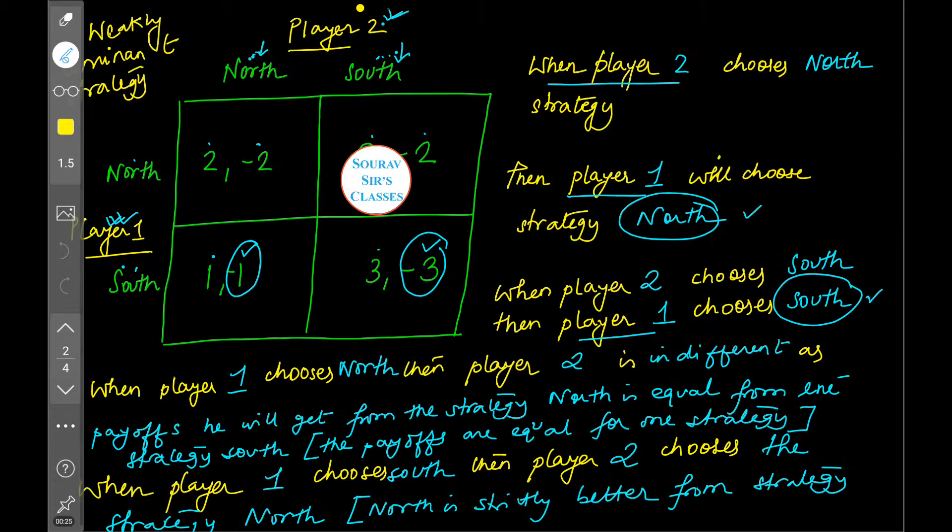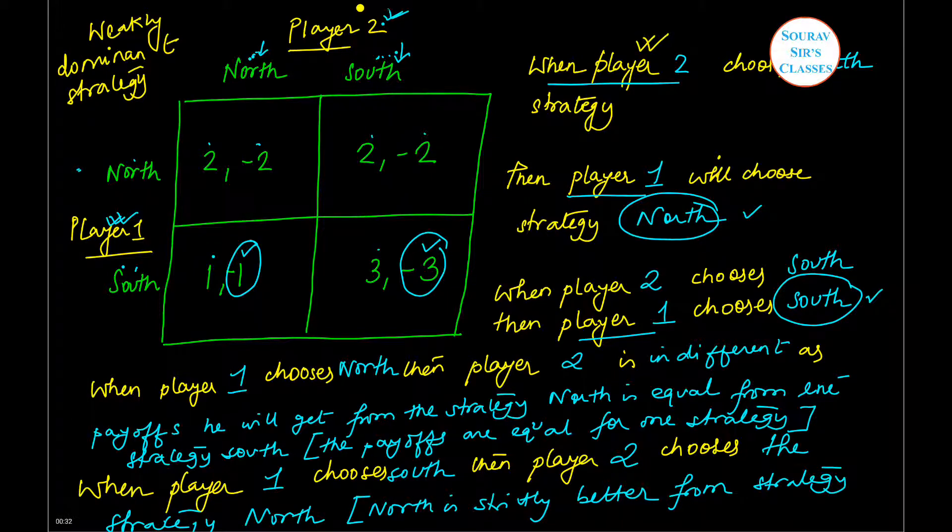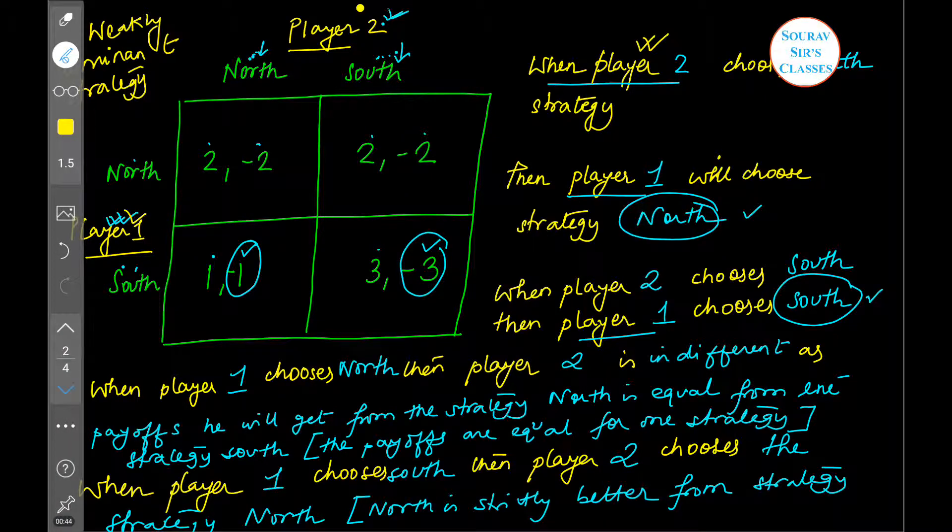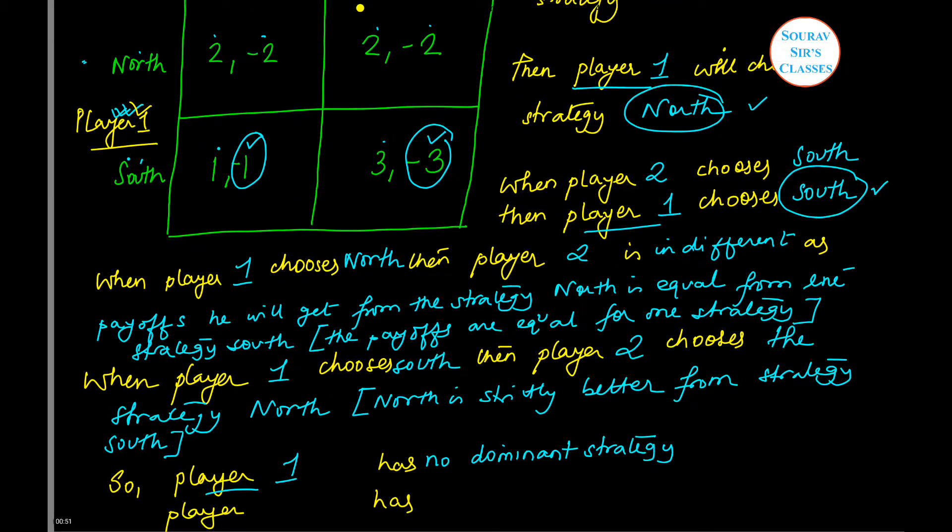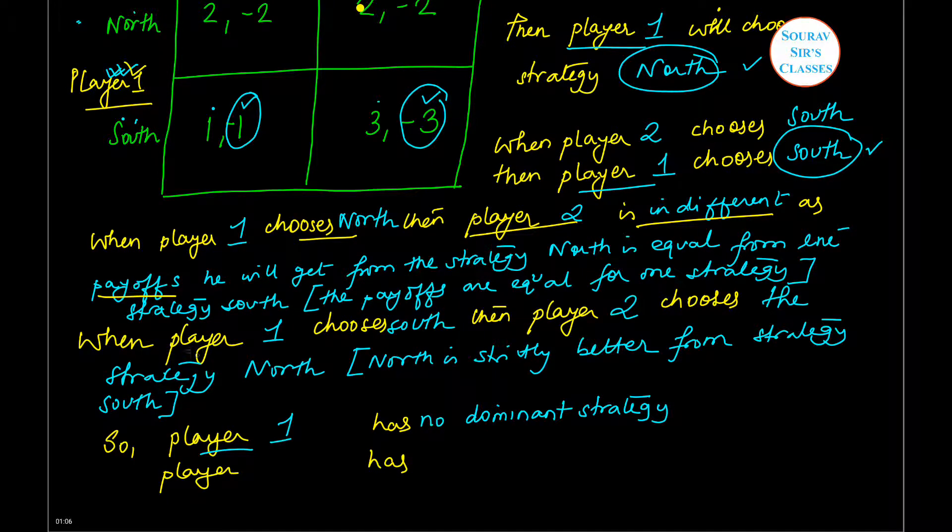Now, this was our payoff matrix and we have seen that player two does not have any strictly dominated strategy. For player one, in one case the payoff of the two strategies were equal. However, when player one was choosing North, player two was indifferent between the two strategies because the payoff he was receiving was the same from the two strategies. While when player one was choosing strategy South, player two had a dominant strategy because North was strictly better than the strategy South.